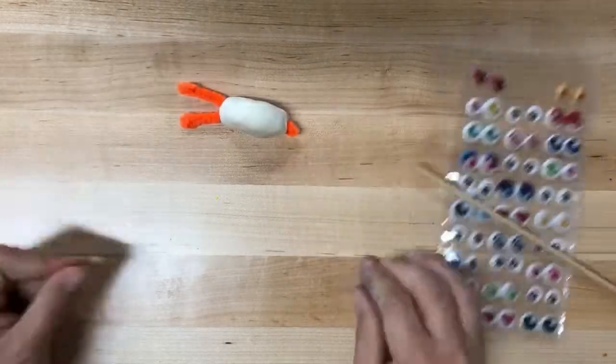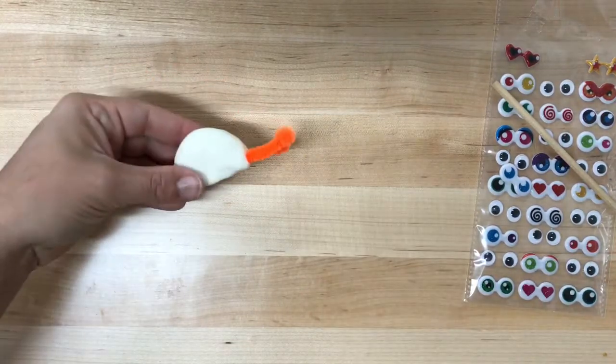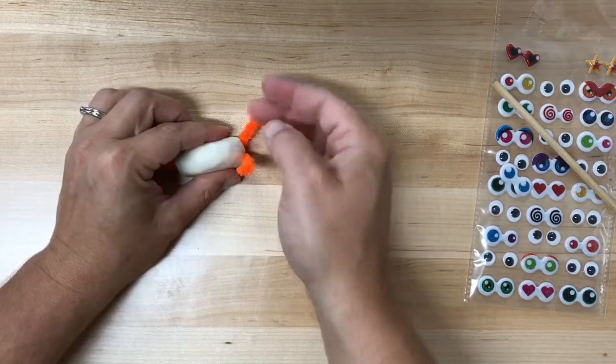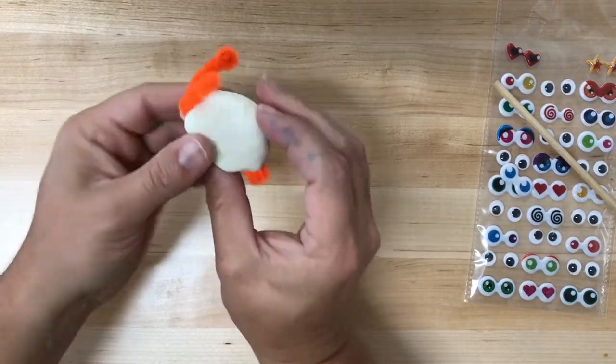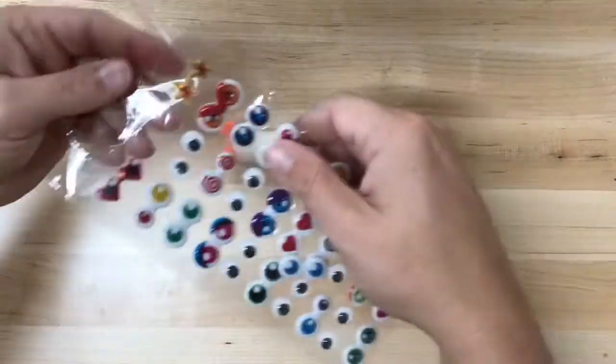If you used Fimo clay for this, I found out that you can cook these in the oven no problem. So 275 for 15 minutes and the wire was just fine and the clay hardened. So it was perfect.